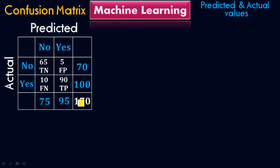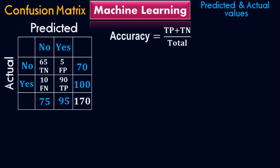This is the confusion matrix — that's how a confusion matrix looks in mathematics. There is mathematics behind the scene. Now, why do we need the confusion matrix? You want to find the accuracy of the model. Accuracy equals true positive plus true negative, all over total. Plugging in the values: 90 plus 65 all over 170, it equals 0.91, which means 91% accuracy.